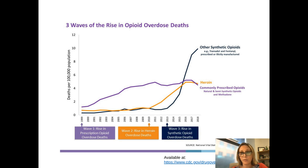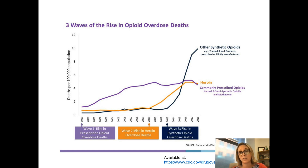That, coupled with pressure from the Joint Commission to achieve zero pain scores for patients — it was considered inhumane for people to experience pain surrounding a procedure, surgery, or injury — really led to an increase in prescribing and a slow but steady increase in prescription-involved opioid overdose deaths. Around 2010, we begin to see a more precipitous rise in heroin-involved overdose deaths, predominantly due to a crossover. And then in 2014, 2015, and 2016, we see a huge rise in synthetic-involved opioid overdose deaths, driven by illicitly manufactured fentanyl.